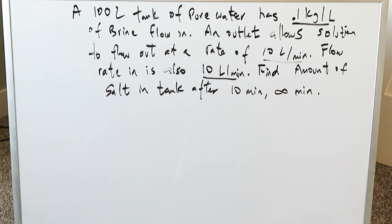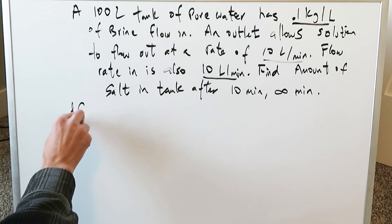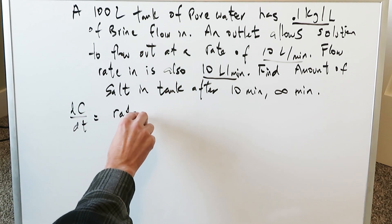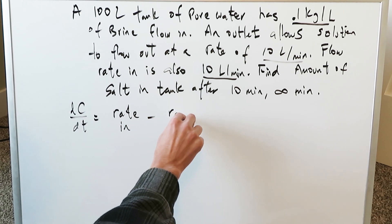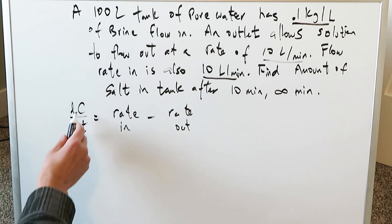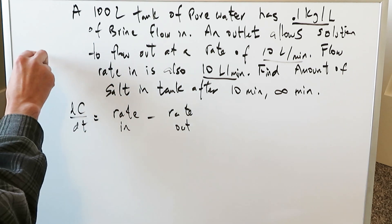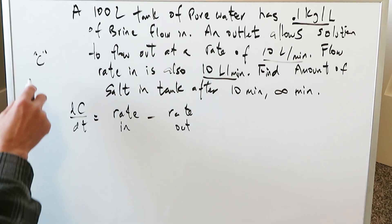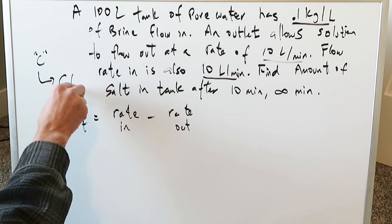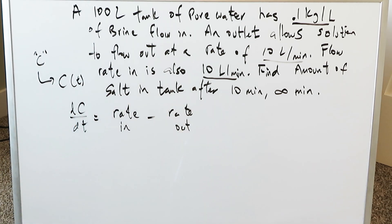The way to handle these problems is to consider that the change in concentration over change in time equals something flowing in (rate in) minus something flowing out from your tank. You have two variables: concentration and time. Initially you look at everything with regards to concentration, but after your computations you develop a function of concentration with respect to time.